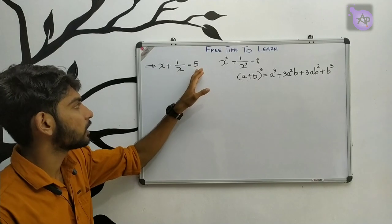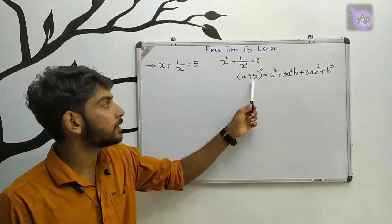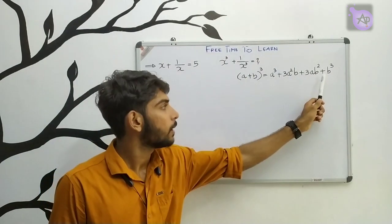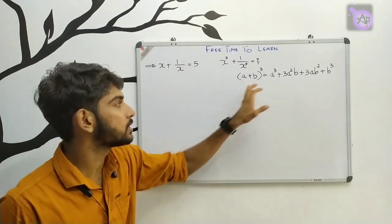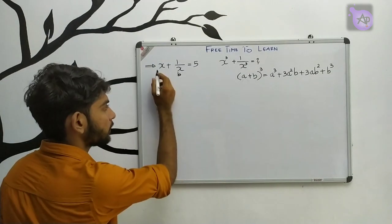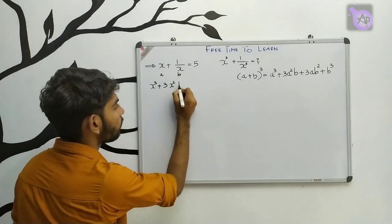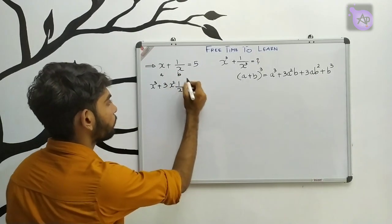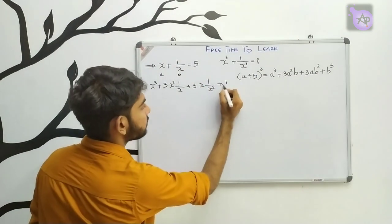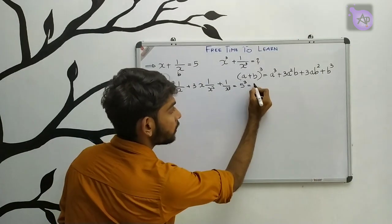Next question: x plus 1 by x equals 5, find x cube plus 1 by x cube. We use the formula: a plus b the whole cube equals a cube plus 3a squared b plus 3ab squared plus b cube. Expanding: x cube plus 3 into x squared into 1 by x plus 3 into x into 1 by x squared plus 1 by x cube equals 5 cube equals 125.